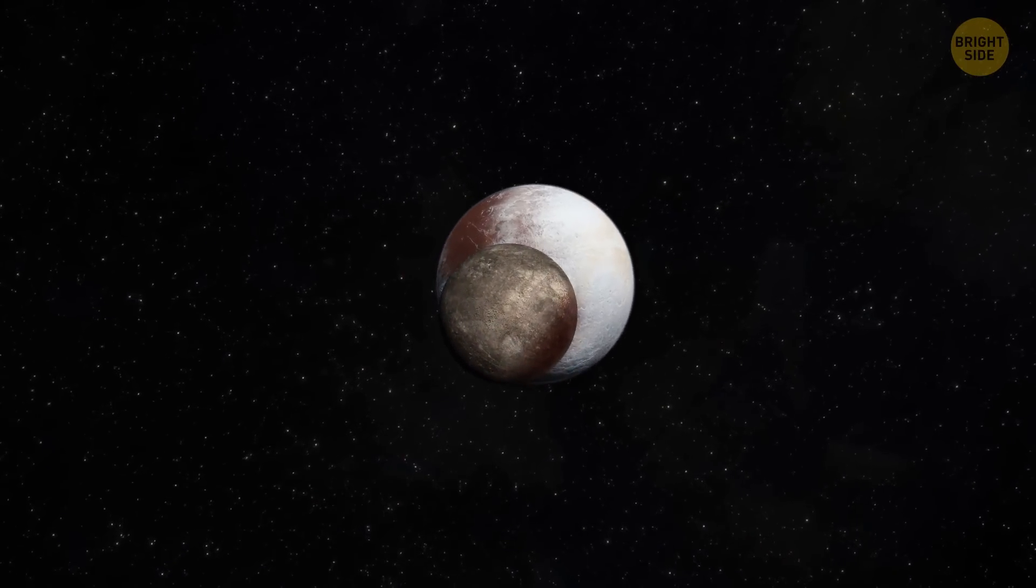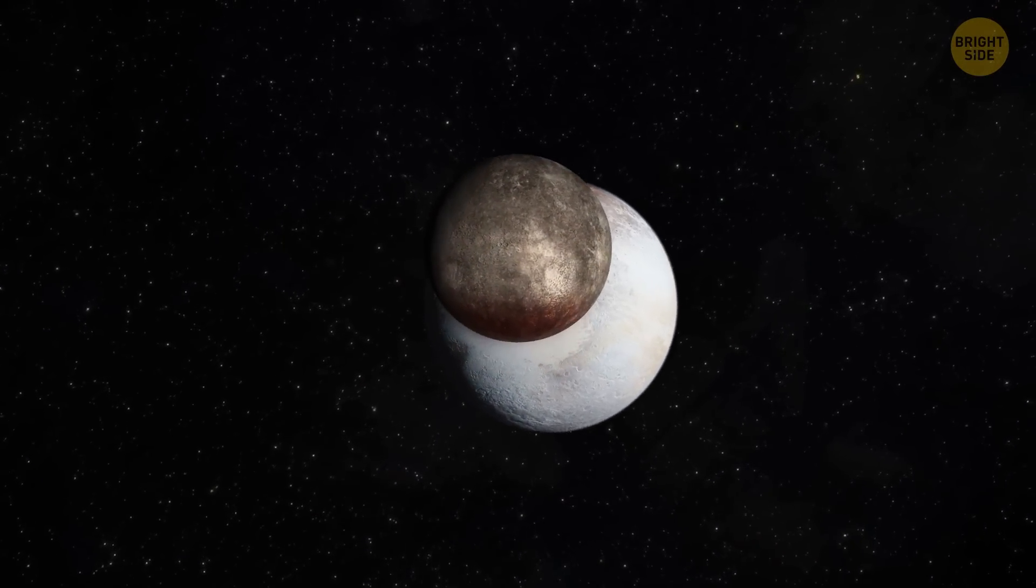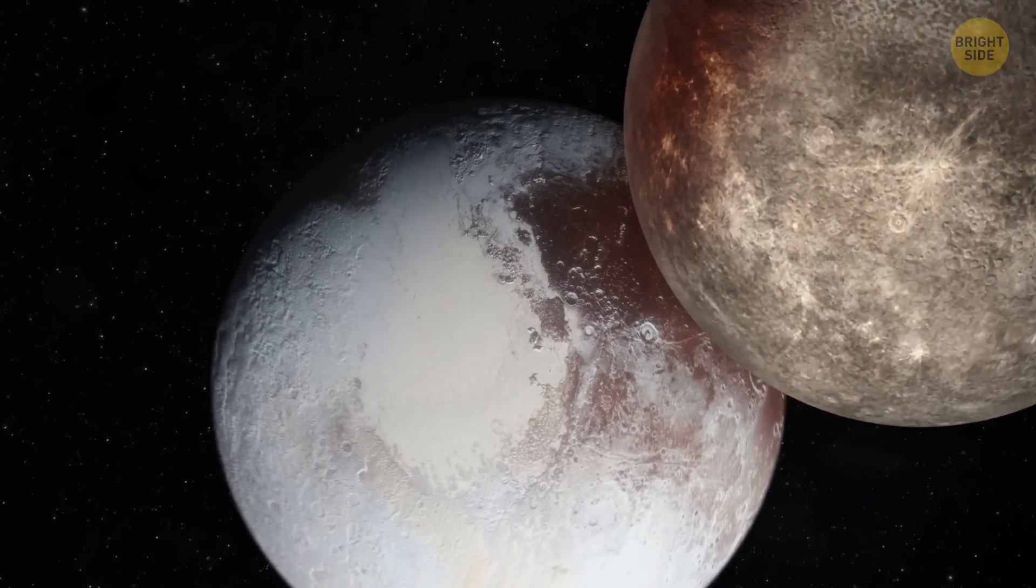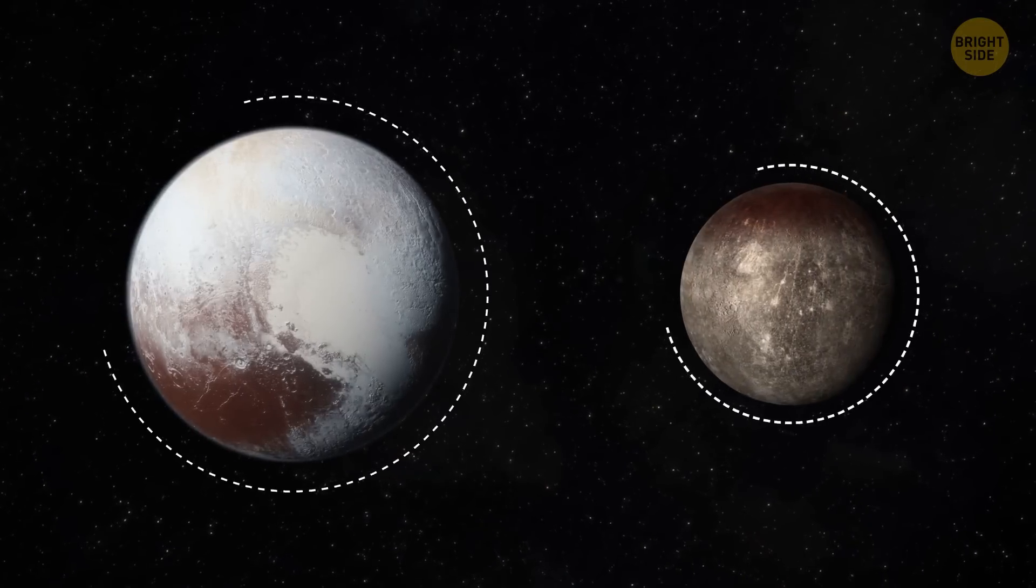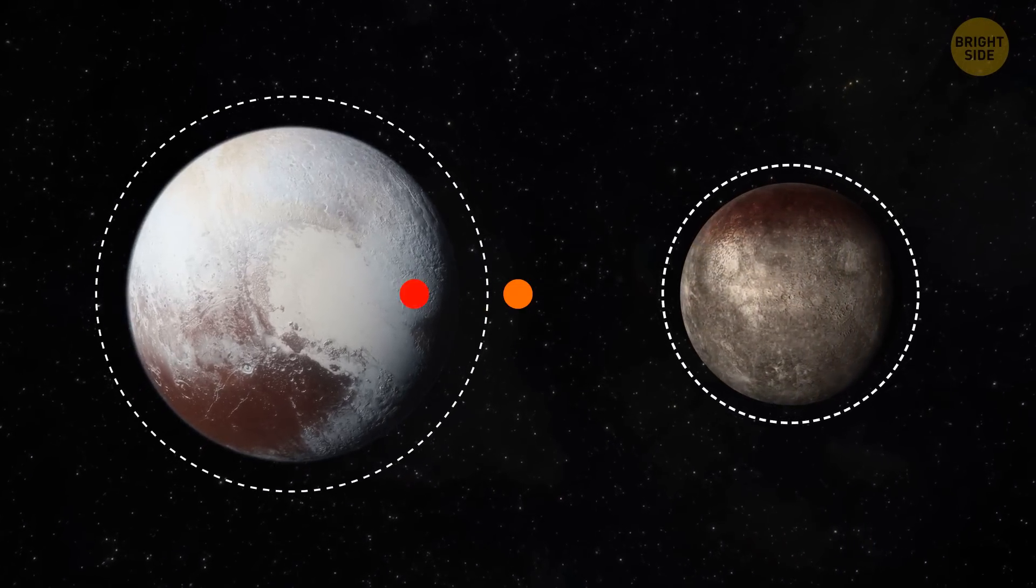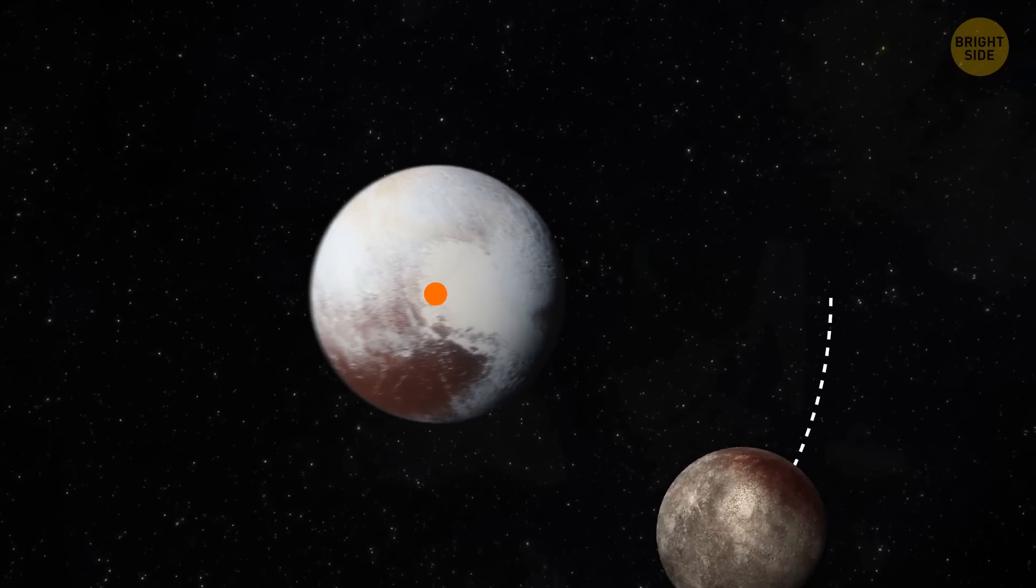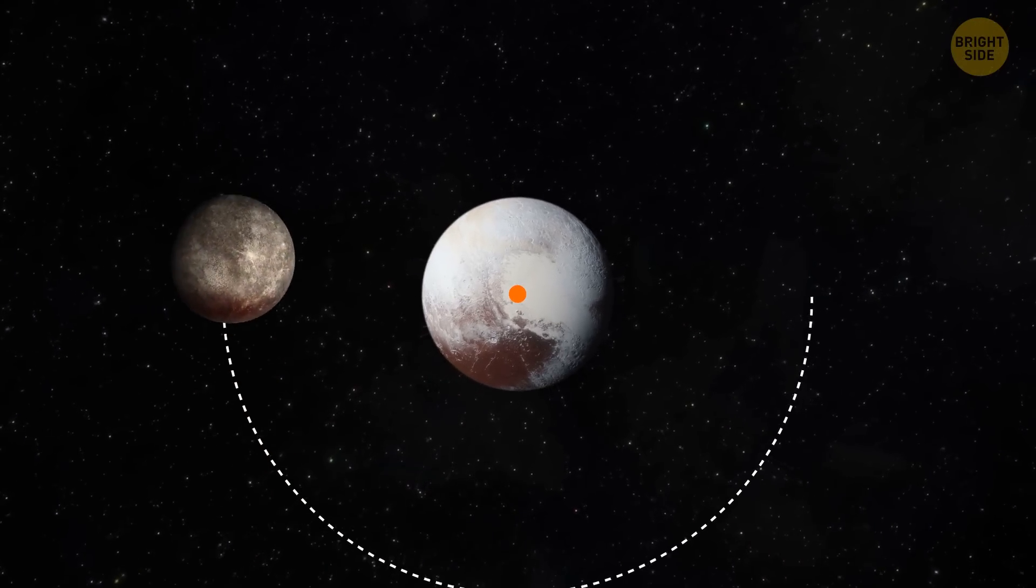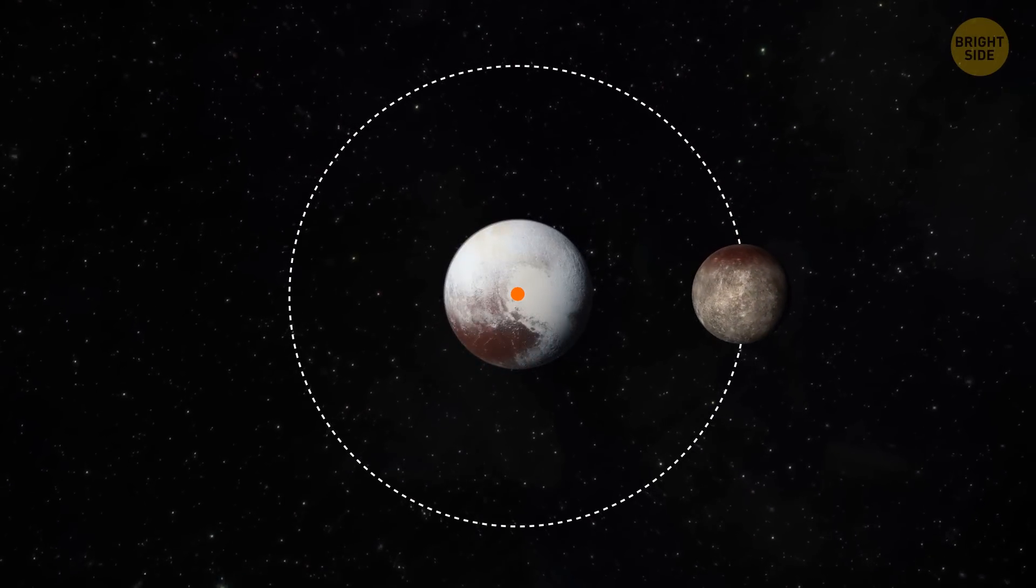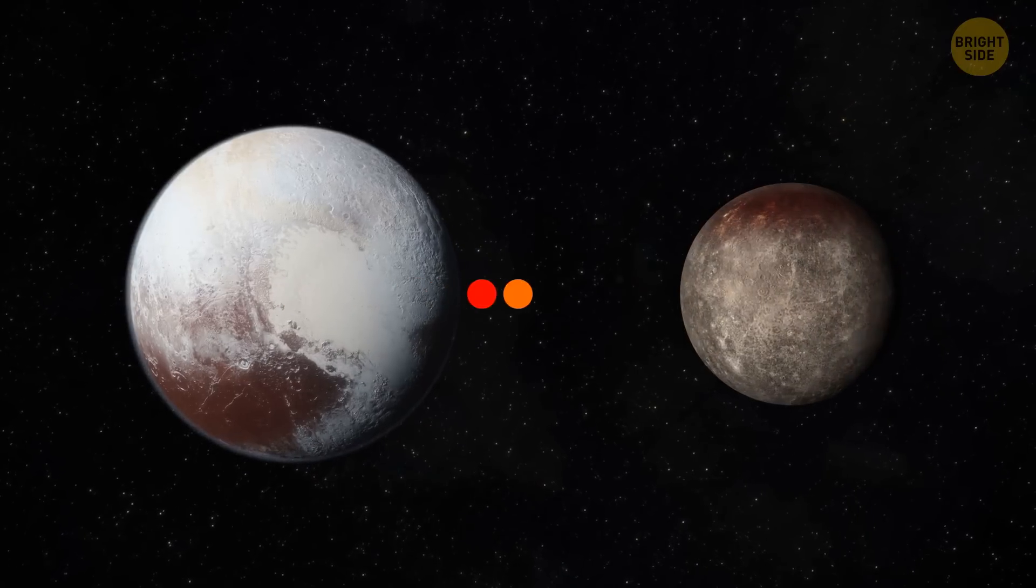The thing about Charon is that it's very big for a moon. It's about half the size of Pluto. This makes scientists wonder, could it be that Pluto is a double planet system? The center of mass, or barycenter of Pluto and Charon, lie outside of Pluto. Normally, with planets and their moons, the center of the planet itself should be the center of the mass, with the moon orbiting around it. But in the case of these two, it seems like they orbit each other.